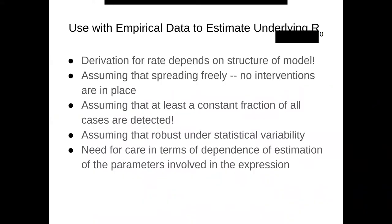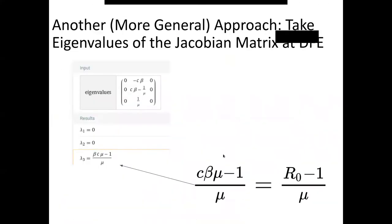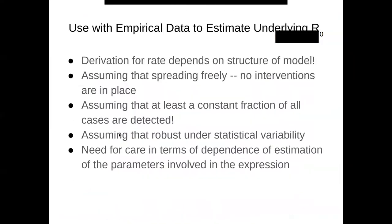What this provides us a way to do is to estimate a rate of growth and turn that into, if we could also reasonably estimate the duration of infectiousness through clinical examination of cases and following them, we get our ticket to estimate the basic reproductive number. That's cool, but it bears keeping in mind some caveats.